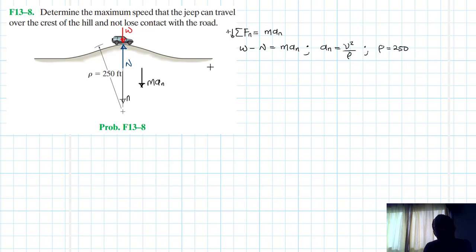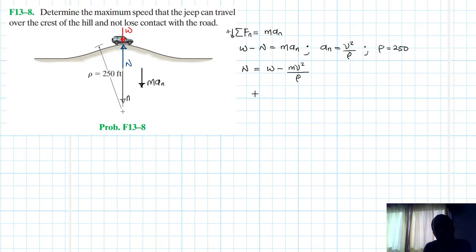Let me write this in terms of N, then give three conditions, and then solve the problem. Making N the subject of the formula — the normal force — this is equal to W minus m·v² divided by ρ.